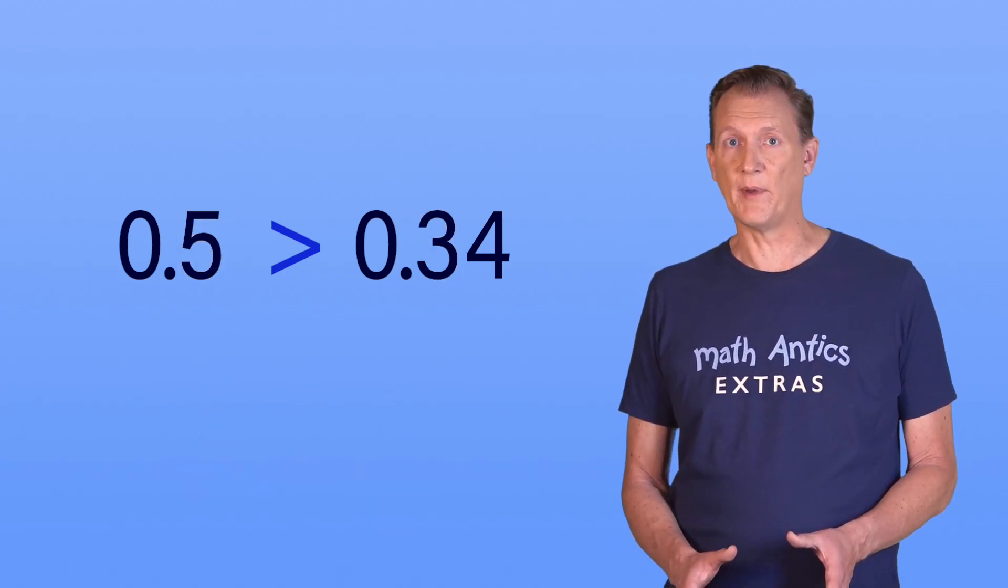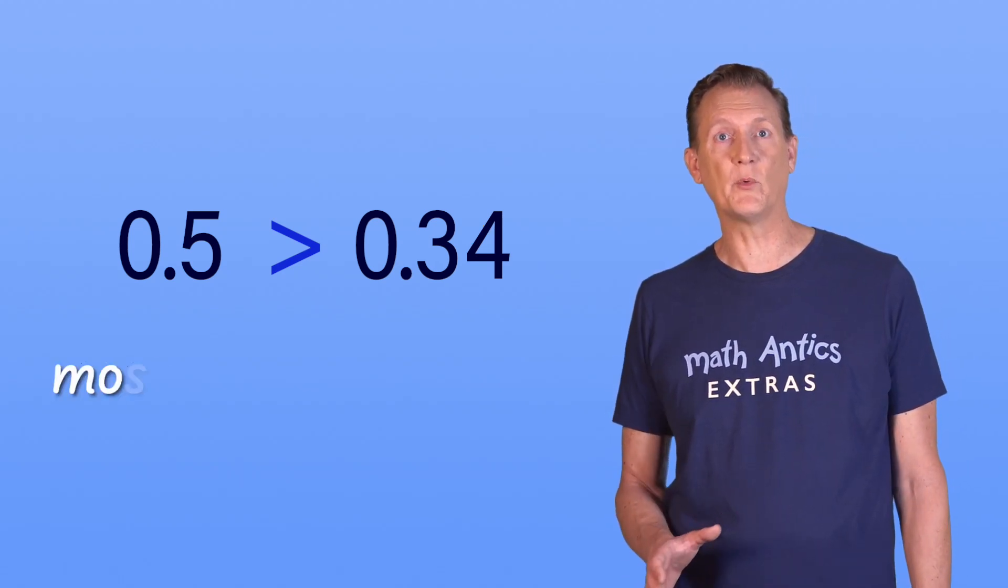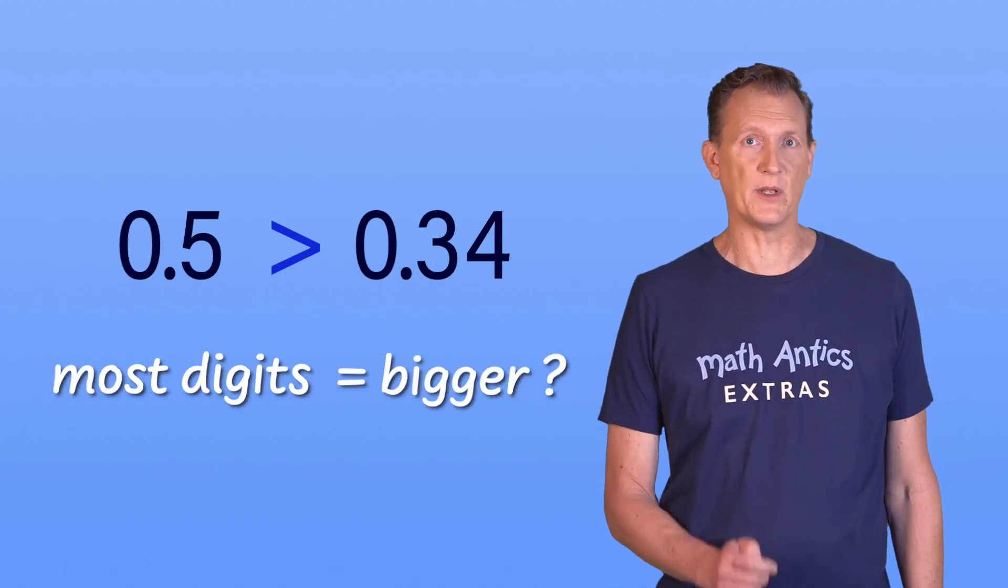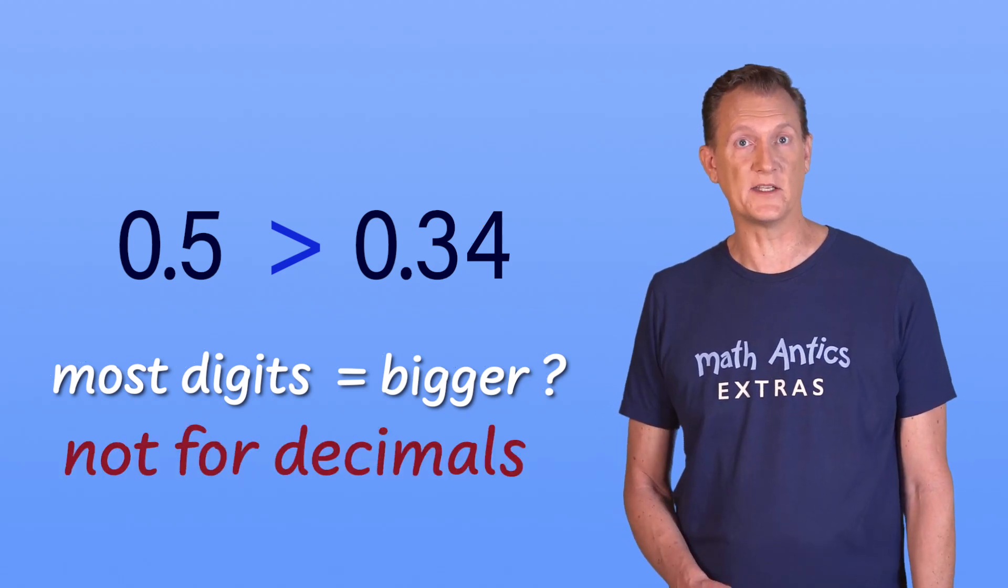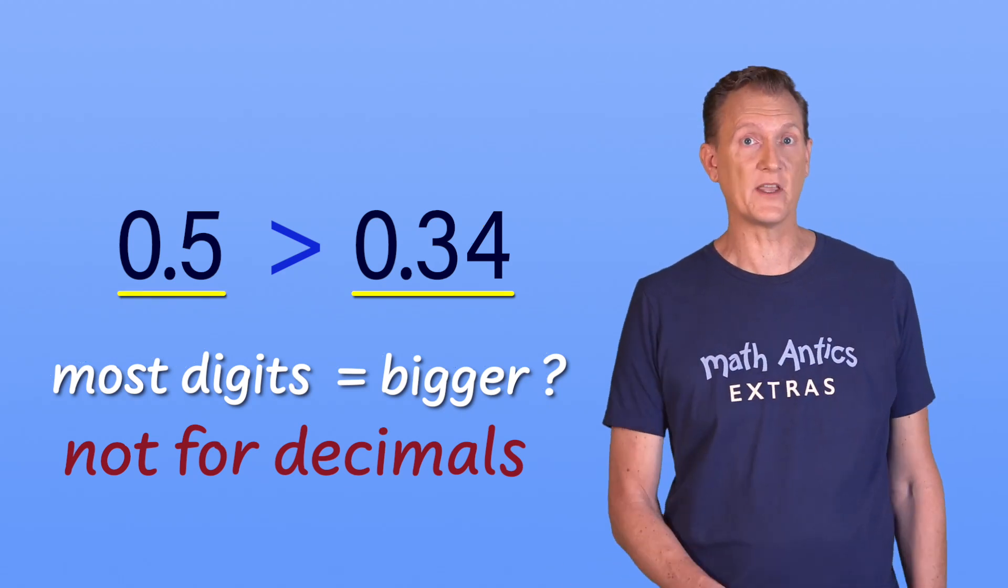Now if you watched the last video about comparing multi-digit whole numbers, you might remember me saying that the number with the most digits is automatically bigger. But that doesn't apply to decimal digits. 0.34 has more digits than 0.5, but its value is smaller.